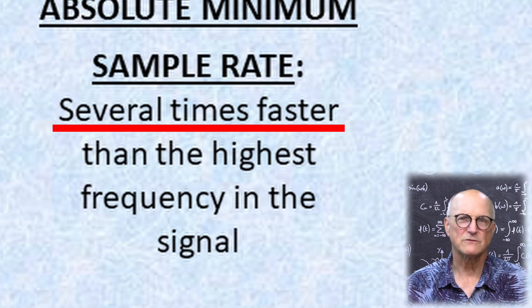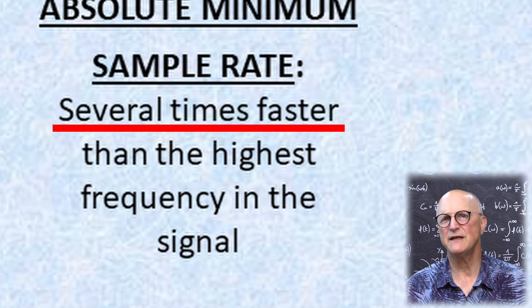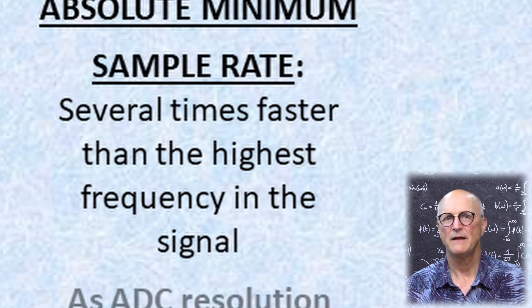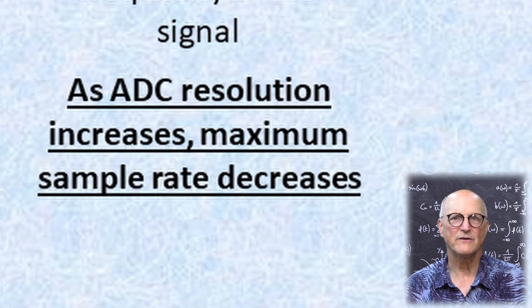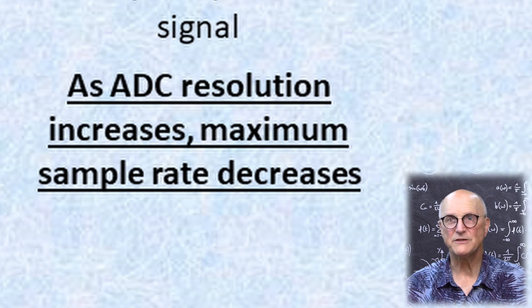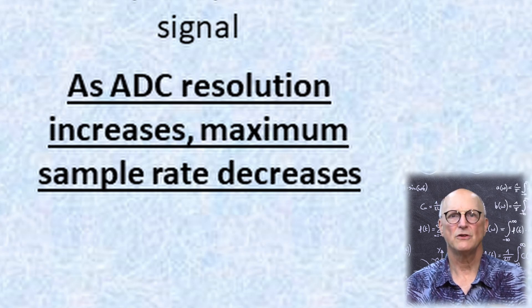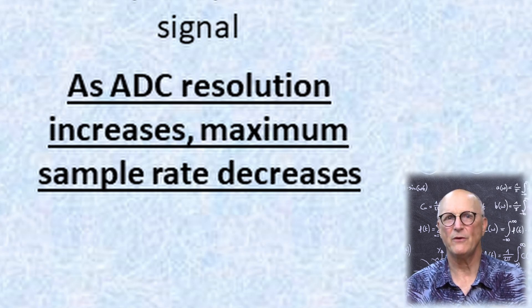This is why the actual sampling rate used in the industry is many times faster than the highest frequency contained in the signal to be sampled. A reality of the hardware dictates that the more bits your ADC has, the lower the maximum sampling rate will be.